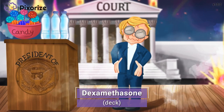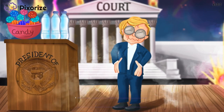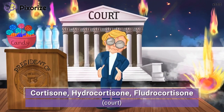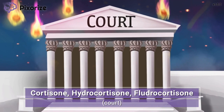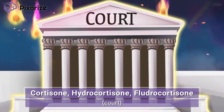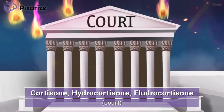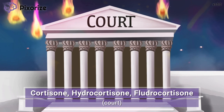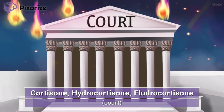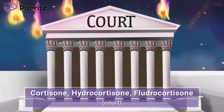Just one more group of drugs to cover. Like you would expect in DC, the president chose to give his speech in front of the court or courthouse. When you think of the court in the background, remember the drugs cortisone, hydrocortisone, and fludrocortisone — because cortisone, hydrocortisone, and fludrocortisone literally have "court" in the middle of their names. All of these drugs are derivatives of the corticosteroid hormone made naturally by our body: cortisol.